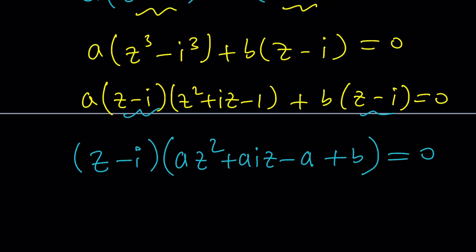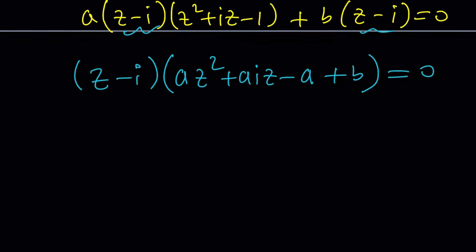Now, Z equals I. Do you see that it's a solution? Z equals I is a solution. And the other solution is going to be coming from our quadratic equation.